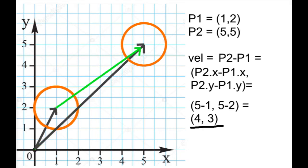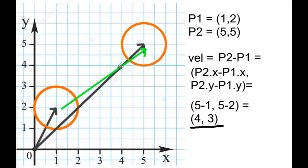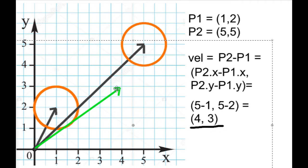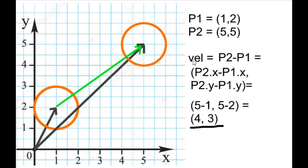And there is another way to look at this. I have the first position and the second position, and the velocity vector shows the difference between these two positions. So to take the difference, I'm subtracting the first position from the second position. It works in a similar way — I subtract the x components and the y components, which will be 5 minus 1 in x and 5 minus 2 in y, and the result will be 4, 3. And if I take this velocity vector and make it start at the origin, then I see that it is pointing to the 4, 3 coordinate point.